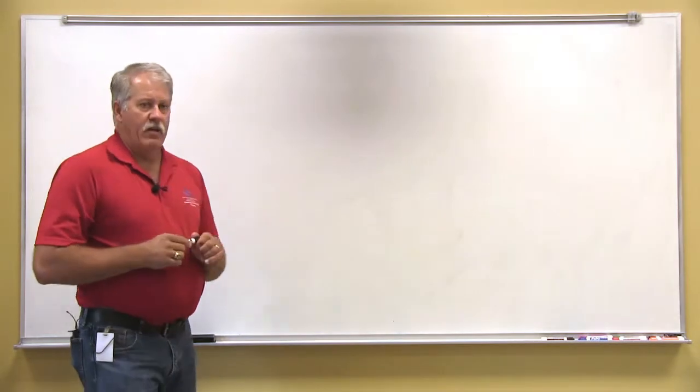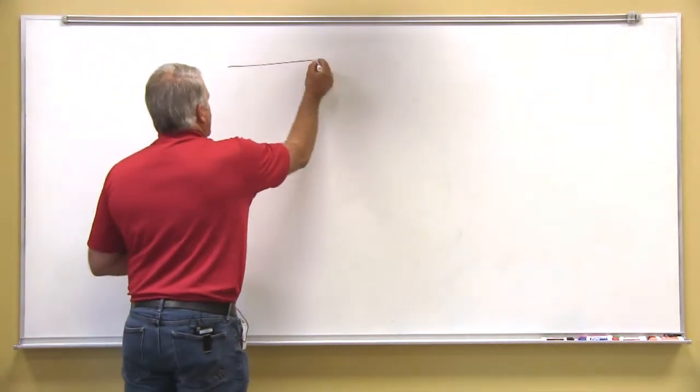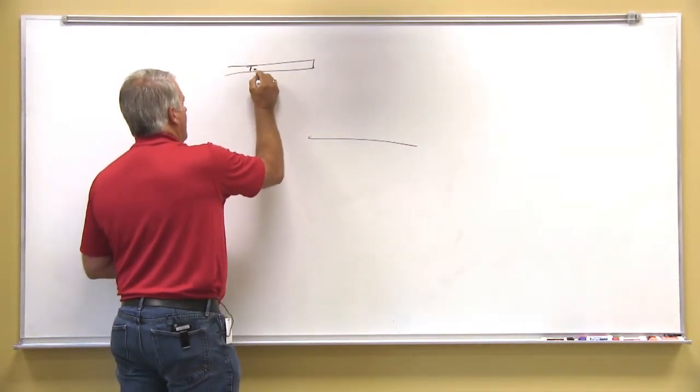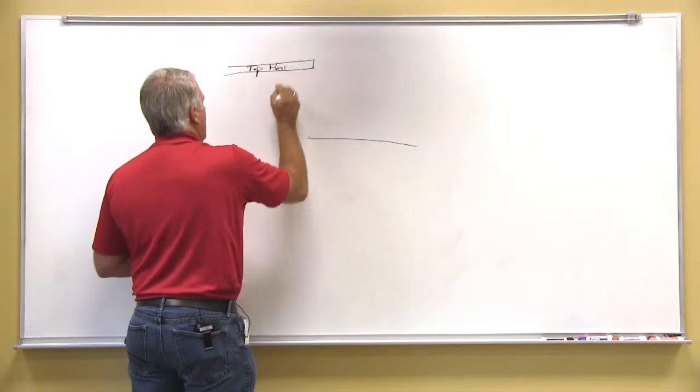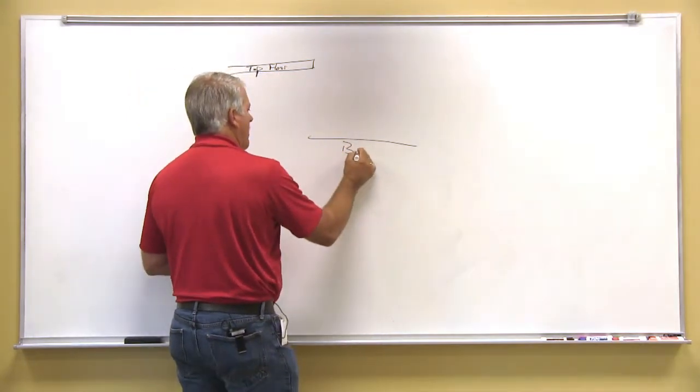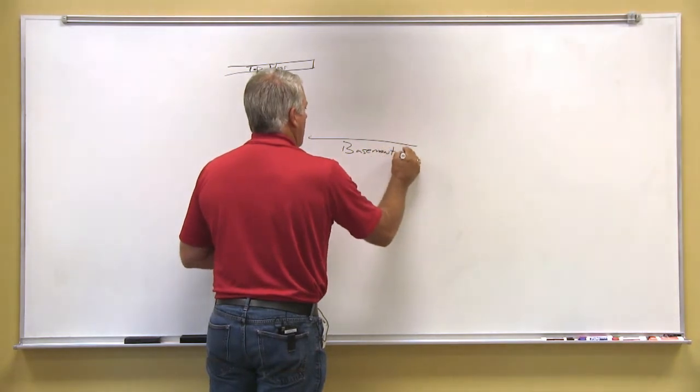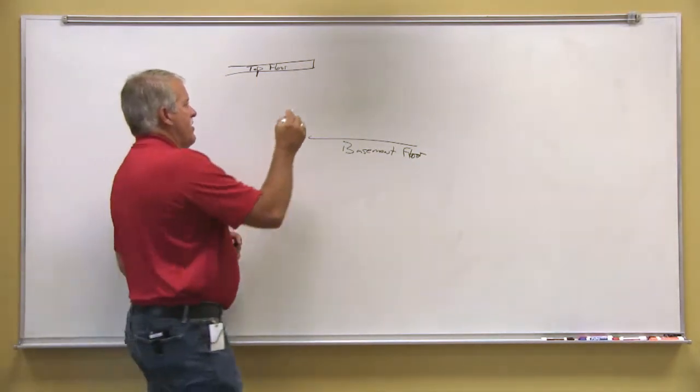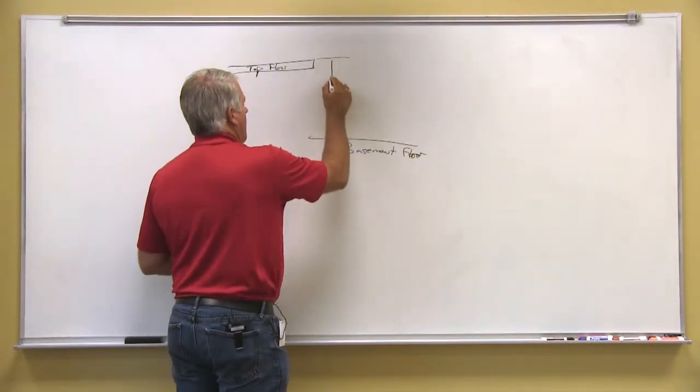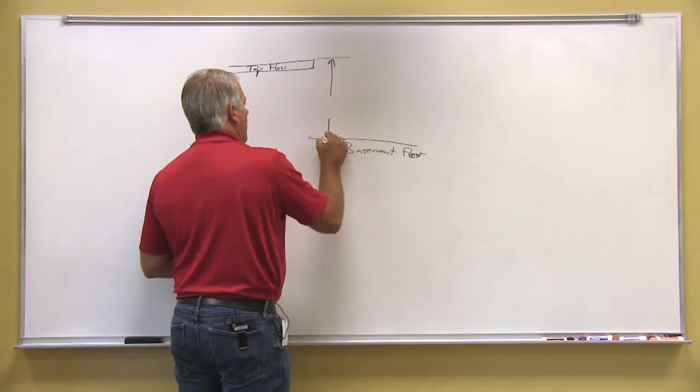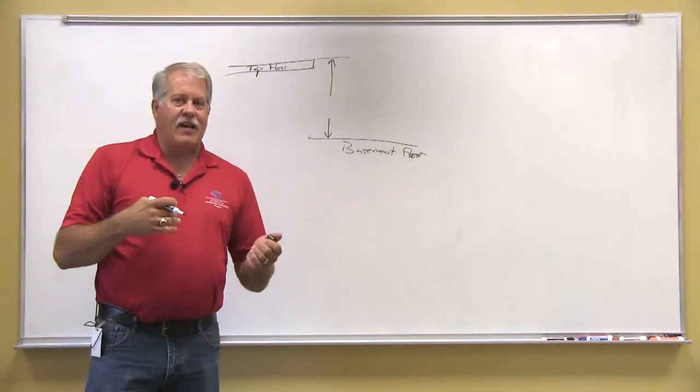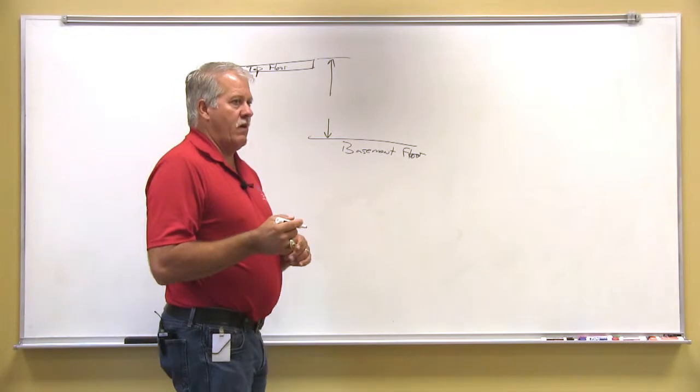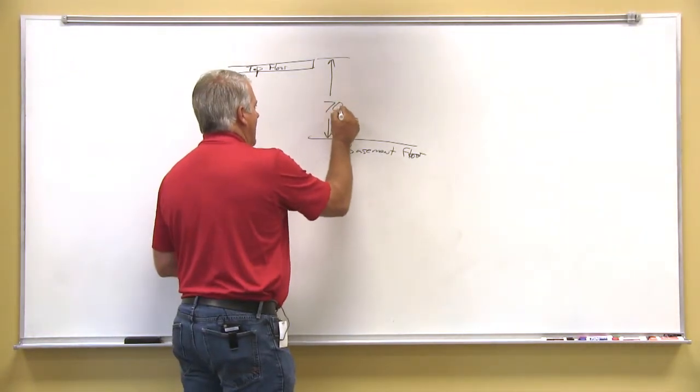The first thing that you need to know when doing a stair layout is the total riser height. If this is the top floor and this is the basement floor, then we need to know the distance from the top of the floor to the basement floor, or if it were a deck, that distance from the top of the deck to the ground. Now, for this example, we're going to make this simple. We're going to make this 70 inches.